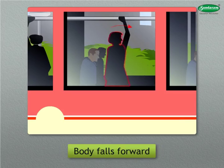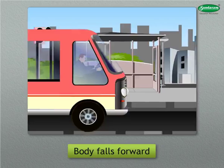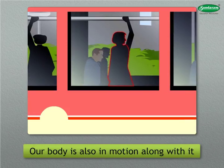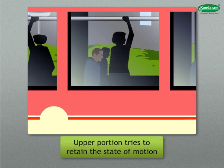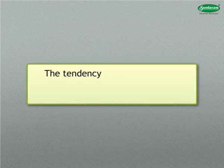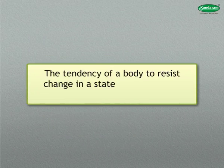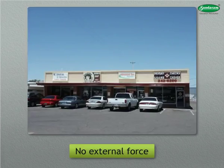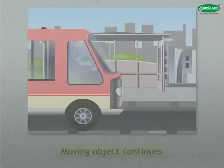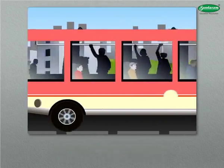In this case, our body falls forward because when the vehicle is in motion, our body inside it is also in motion along with it. When the vehicle stops, the lower portion of our body which is in contact with the vehicle also comes to rest. But the upper portion tries to retain the state of motion and falls forward. The tendency of a body to resist change in its state of rest or state of motion is called inertia. When no external force is acting on an object at rest, it will continue to remain at rest, while a moving object continues to be in motion with the same velocity.